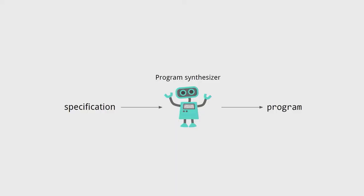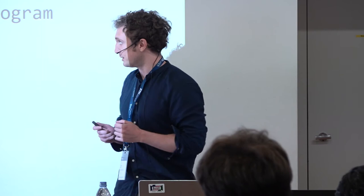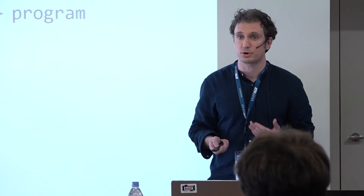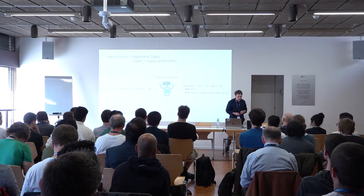I'll start by schematizing the cartoon of program synthesis we'll be working with. When I talk about program synthesis, I mean some kind of PL or AI system that takes as input a specification — some kind of human-authored thing that tells the synthesizer what kind of program to construct — and then outputs source code. Different choices for the specification, the program space, and the synthesis engine lead to a pretty broad space of different kinds of program synthesizers.